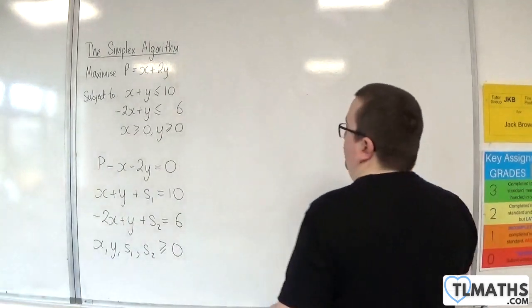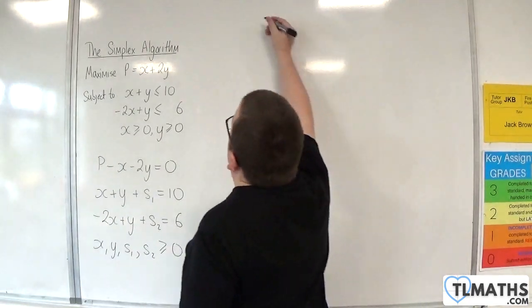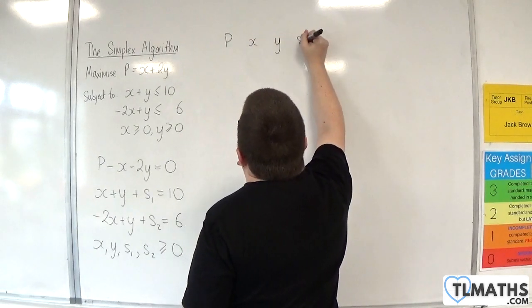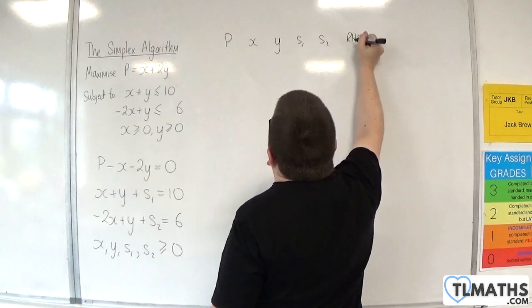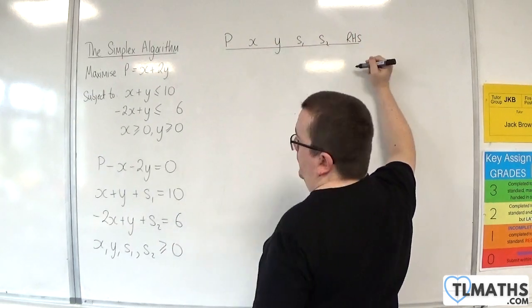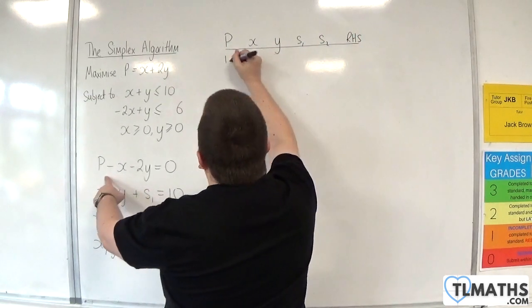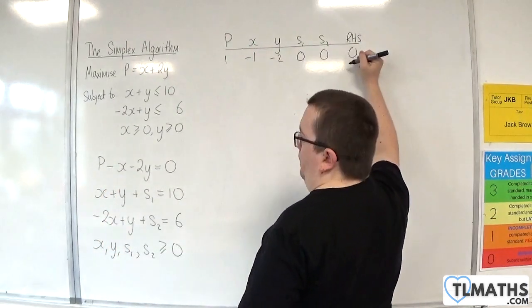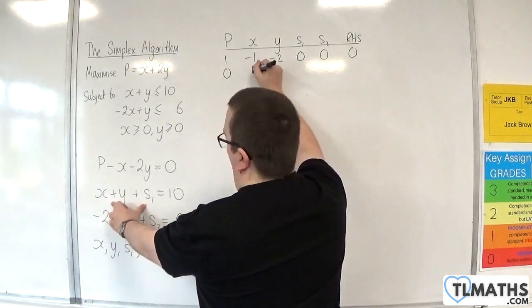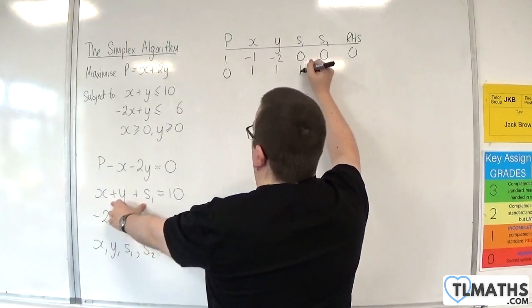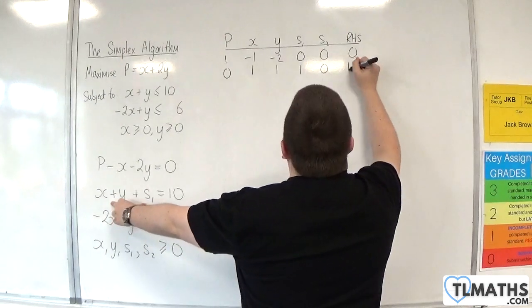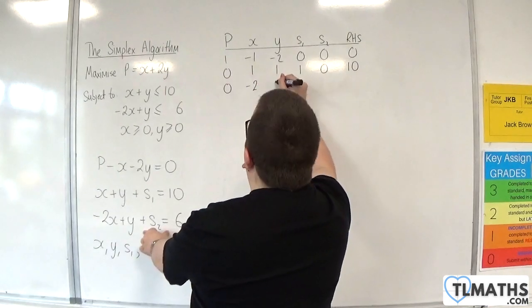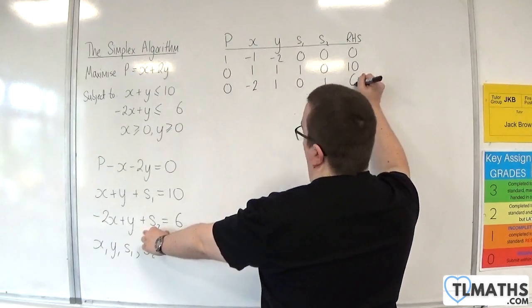So let's set up the initial tableau. p, x, y, s1, s2, right-hand side. And we're going to have 1, minus 1, minus 2, 0, 0, 0. Then this one, we've got 0, 1, 1, 1, 0, 10. Then this one, we've got 0, minus 2, 1, 0, 1, 6.